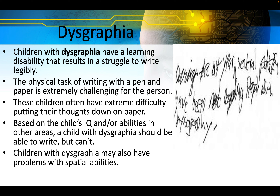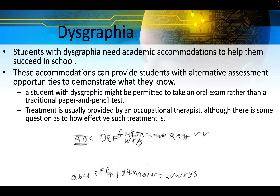Children with dysgraphia have a learning disability that results in a struggle to write legibly. The physical task of writing with a pen and paper is extremely challenging — these children often have extreme difficulty putting their thoughts down on paper. Based on the child's IQ and abilities in other areas, a child with dysgraphia should be able to write but can't. Students with dysgraphia need academic accommodations such as alternative assessment opportunities. A student with dysgraphia might be permitted to take an oral exam rather than a traditional paper and pencil test. Treatment is usually provided by an occupational therapist.